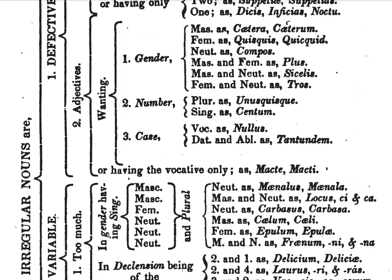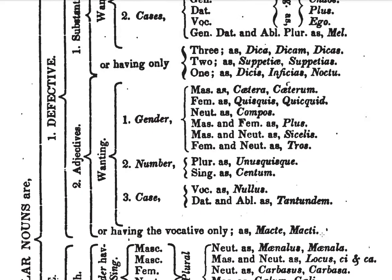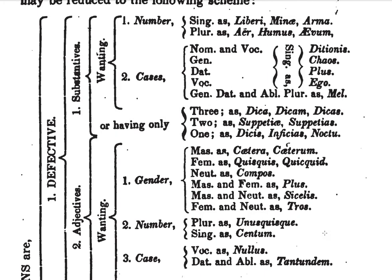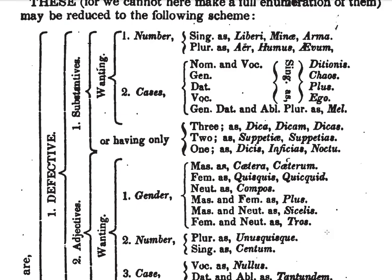Let's look at the defective. We have defective nouns — there are adjectives and substantives — and we have those that are lacking number, and those that are lacking cases. Number one, those lacking number: singular, as in liberi, minae, arma; and plural, as in aer, humus, and aevum.